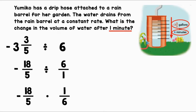We can already see that our answer is going to be negative. Now let's multiply straight across. 18 times one equals 18. Five times six equals 30.